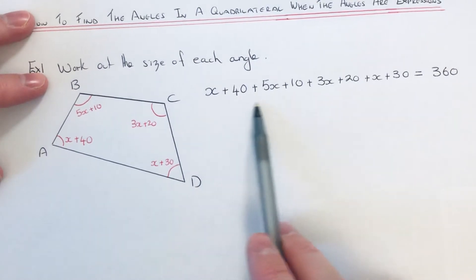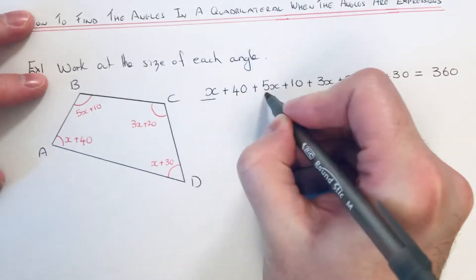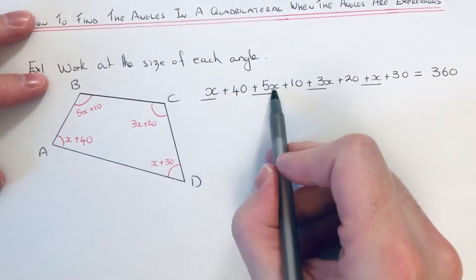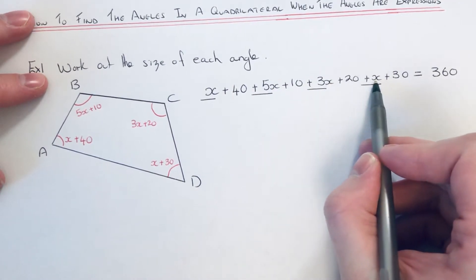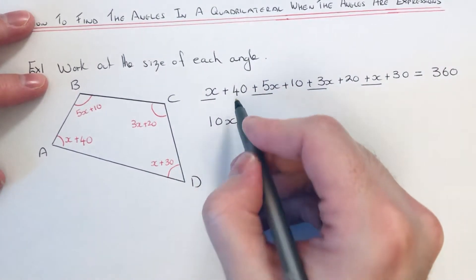So we've made this equation here. We're just going to simplify it first. So we can add the x's together. So x add 5x is 6x, add 3x is 9x, add another x is 10x.